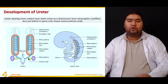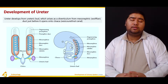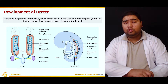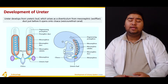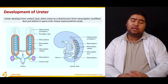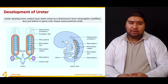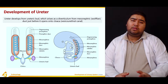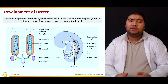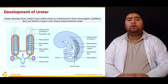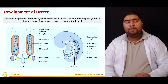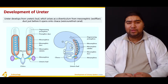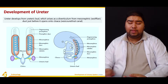The ureteric bud is responsible for the formation of the ureter and the collecting system of the kidney. The tip of the ureteric bud is covered by the metanephric blastema. The ureteric bud then forms a funnel-shaped structure known as the renal pelvis. From the renal pelvis, it divides to form major calyces, which undergo further division to form minor calyces. The minor calyces form collecting ducts, which further divide to form collecting tubules.